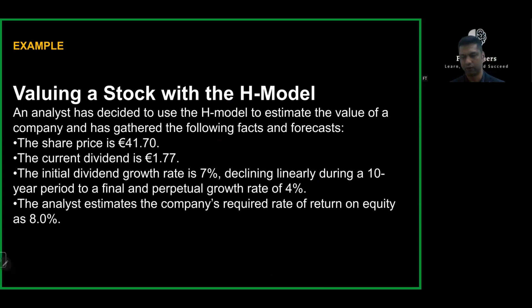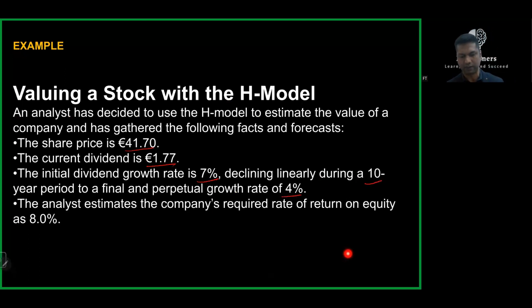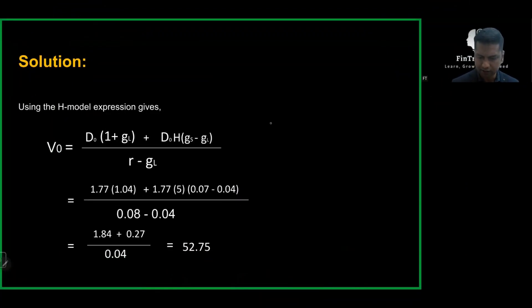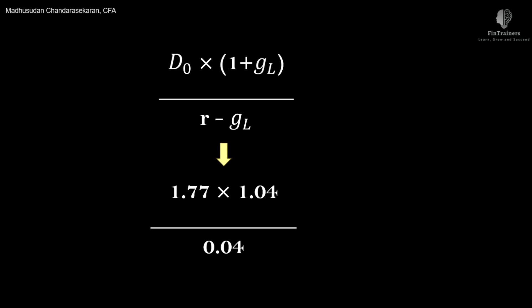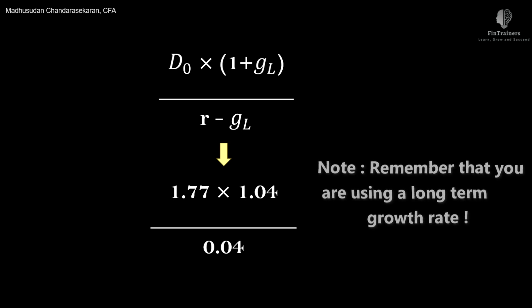Let's look at an example: valuing a stock with the H Model. An analyst has decided to use the H Model. The share price is $41.70, the current dividend D0 is $1.77, currently growing at 7%, declining over 10 years to a long-run rate of 4%, and the cost of equity is 8%. The first component is D0 times (1 + g_L): 1.77 multiplied by 1.04, the long-run growth rate.